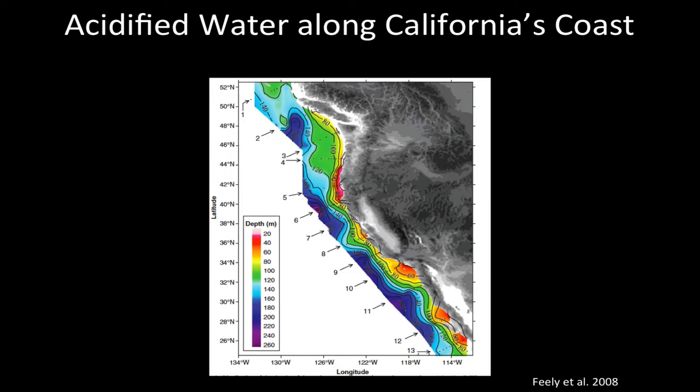The second reason is that this deep water coming up along our shoreline is old water. The last time it was at the surface was, on average, about 50 years ago, because the whole ocean circulates — but instead of 40 minutes like a washing machine, it takes 50 years. It maintains a signal of what was happening at the surface when it sank. So the water coming up along our coast was influenced by the Industrial Revolution and is already more acidic. We in California have an amazing opportunity to study this because we have a natural pH gradient.